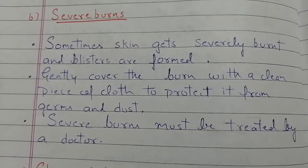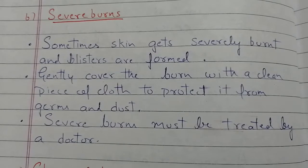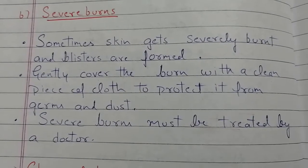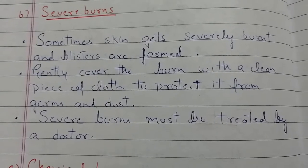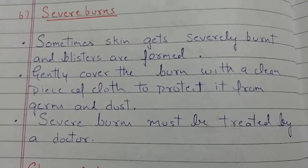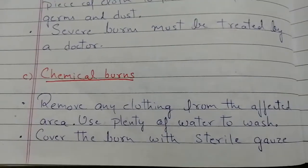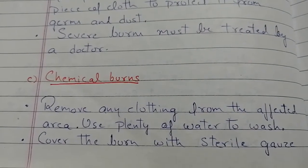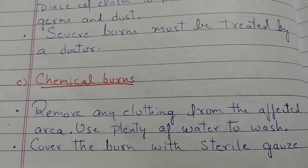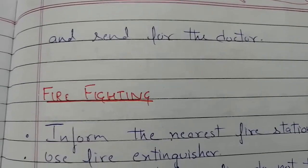For severe burns: sometimes skin gets severely burnt and blisters are formed. Gently cover the burn with a clean piece of cloth to protect it from germs and dust. Severe burns must be treated by a doctor. For chemical burns: remove any clothing from the affected area, use plenty of water to wash the burn, cover it with sterilized gauze, and consult a doctor.